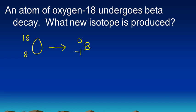Now we have to figure out what is the new isotope, and this is the part that we have to do the math. So it's just like we did before. 18 minus 0 is 18, and the same thing on the bottom. 8 minus negative 1 is 9. And so it's 18 over 9.